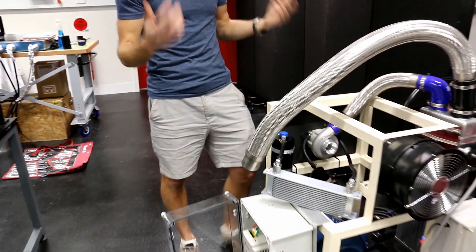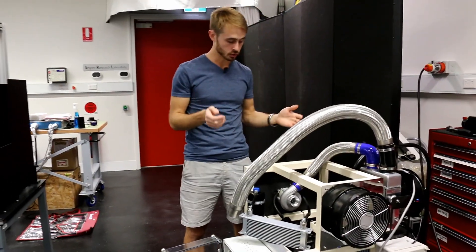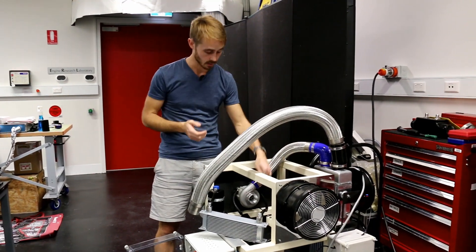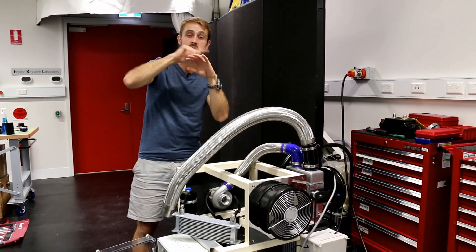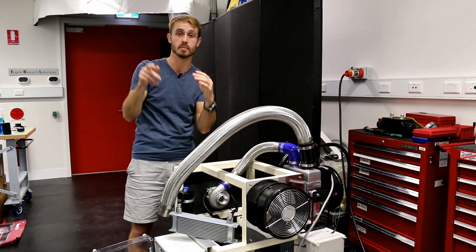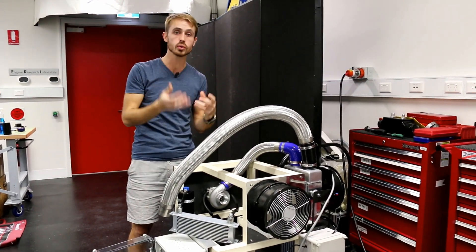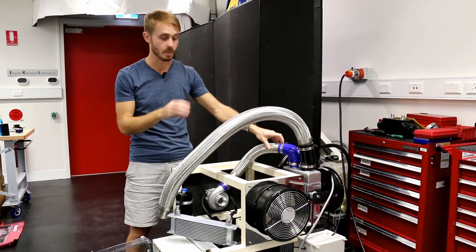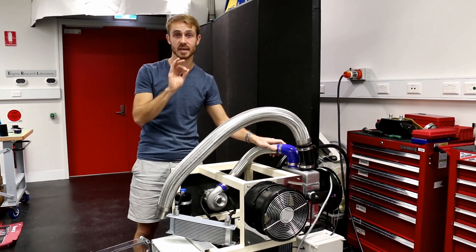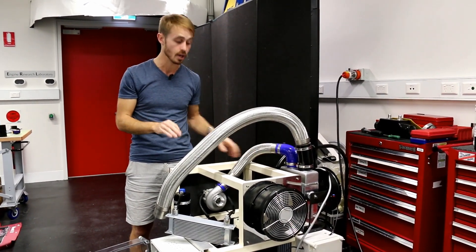Now contrary to popular belief, turbo surge is actually a fully aerodynamic phenomenon. It's the compressor blades having flow separation and stall off the back of them, and this is what makes the doo doo doo noise and basically will slow your turbo down. It doesn't stop the shaft speed completely, which is a common misconception, but it does slow it down.